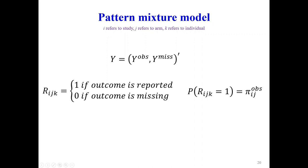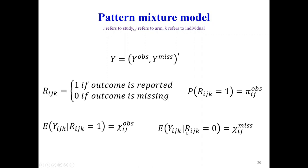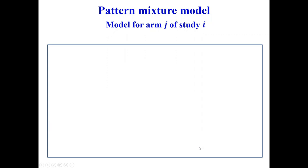We know the probability of observing data, denoted pi-obs. We also know the expected outcome in the observed data, also denoted pi-obs. What we don't know is the expected outcome in the missing participants, denoted pi-miss. The pattern mixture model specifies the joint distribution of the measurement model Y and the dropout indicator R in terms of the marginal distribution of R and the conditional distribution of Y given R.